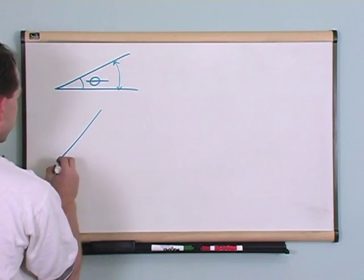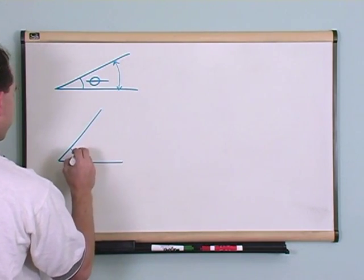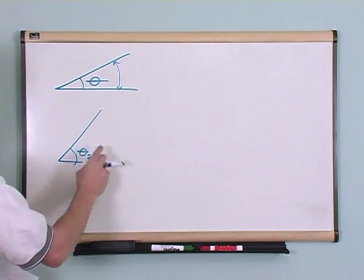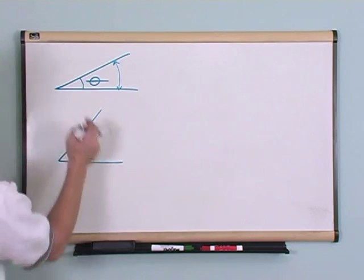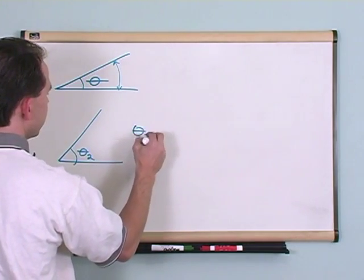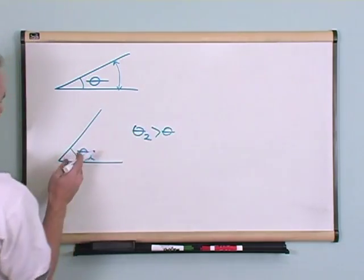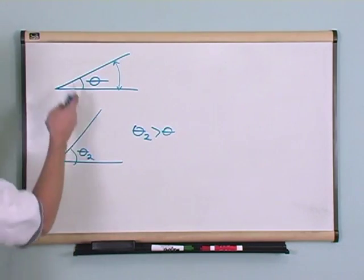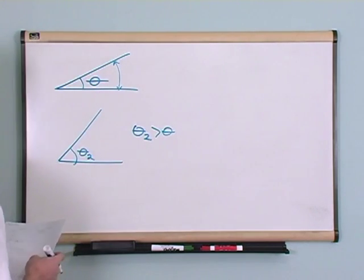Here would be another angle with theta two. Now definitely this is more open than this, so we say theta two is greater than theta. All I'm saying here is this angle is bigger than this one, and that makes sense from looking at it.